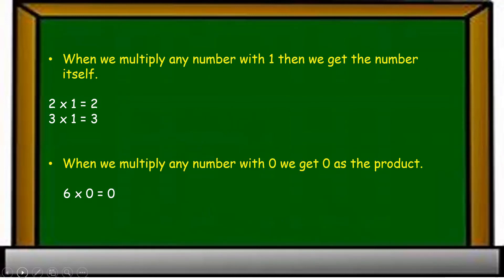When we multiply any number with one, we get the number itself. For example, two into one is equal to two, and three into one is equal to three. In both cases, we are multiplying the multiplier with one, so we get the number itself.